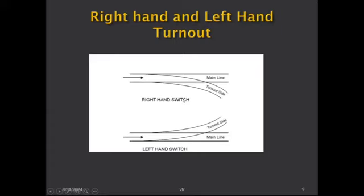Regarding right-hand or left-hand turnout: when standing facing the direction of movement and facing the points and crossing, if the turnout takes place on the right-hand side it is called a right-hand turnout. When the turnout is on the left-hand side, it is called a left-hand switch or left-hand turnout.